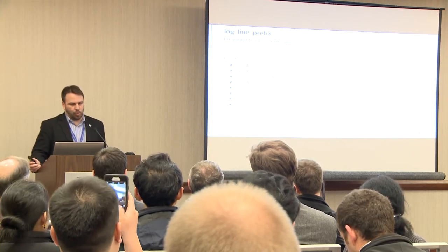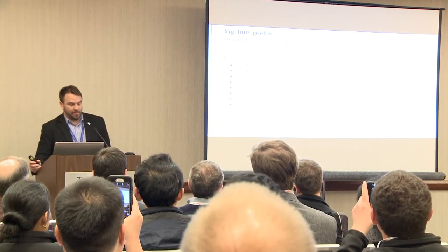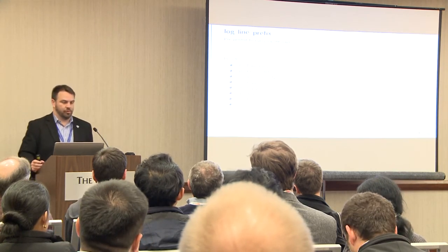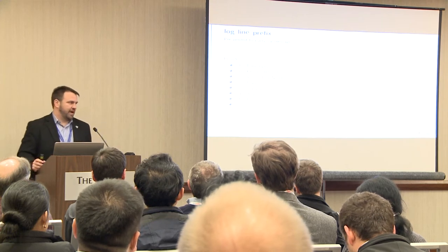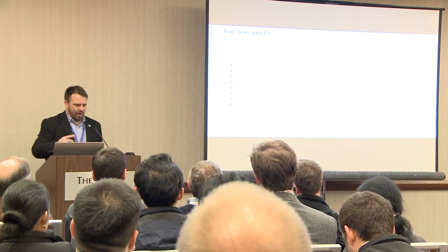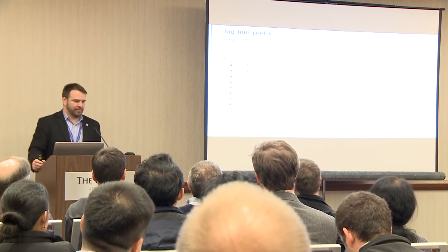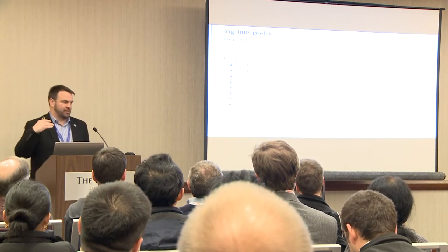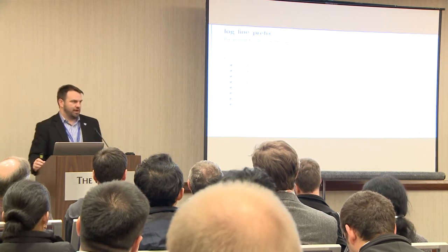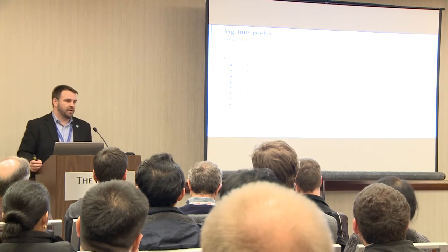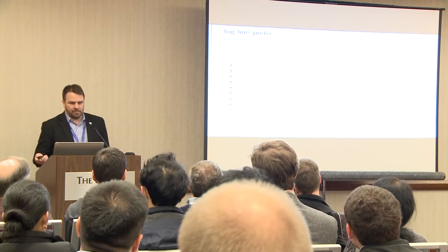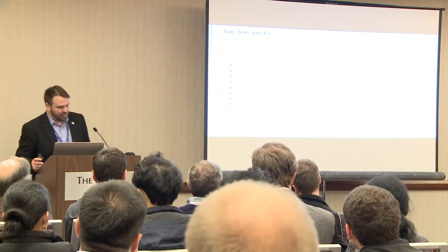The next one is log_line_prefix. Our default log line prefix is absolutely horrible and doesn't give you any useful information. I recommend a prefix that includes things like timestamp and process ID. The process ID tells you which backend process is associated with each log entry, since in a busy system you'll have lots of independent Postgres backend processes logging to the same file.